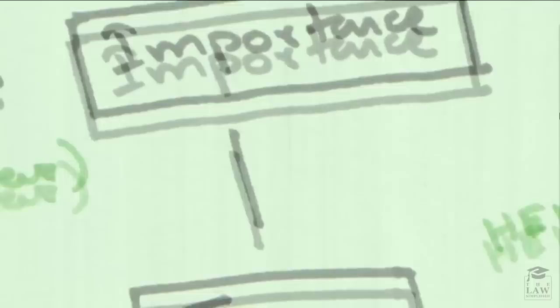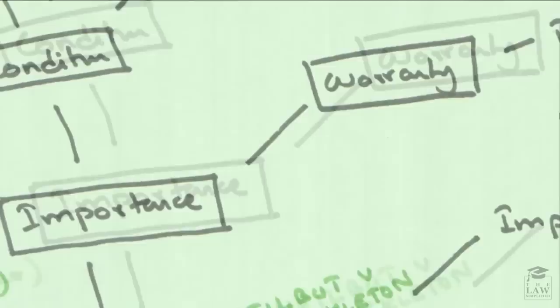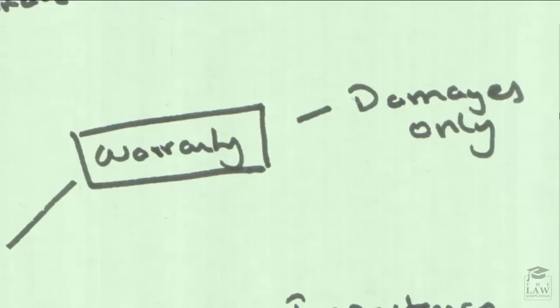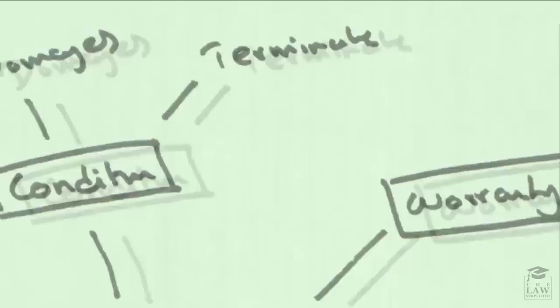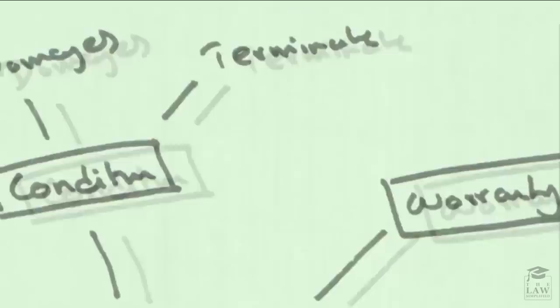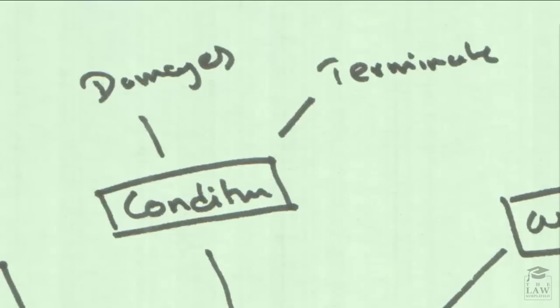So, in line with this, we have to first determine the importance of certain express terms. There are three main types of express terms. You have warranties, you have conditions, and you have innominate terms. Warranties are the lesser category of the three, which means that where there has been a breach of a warranty, only damages can be upheld or only damages can be provided for the aggrieved party. Conditions are a step above warranty, and where there is an alleged condition having been breached and the court upholds that, there can be damages as well as even termination of the contract itself, if the claimant so wishes to.